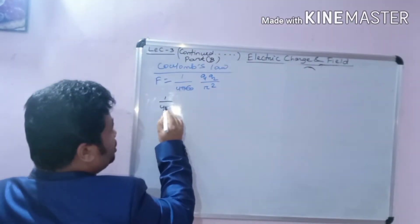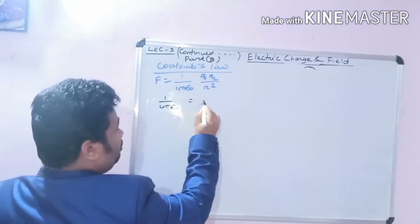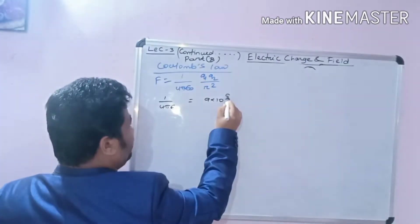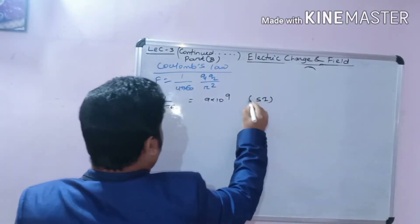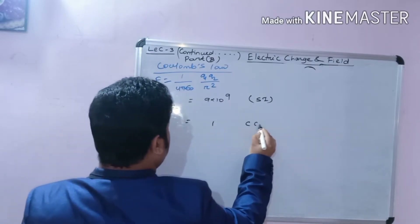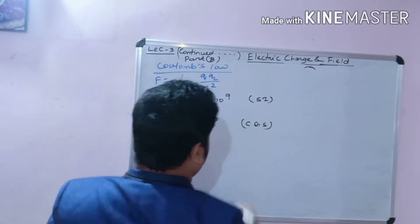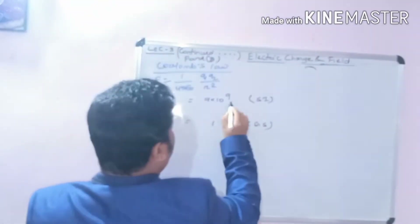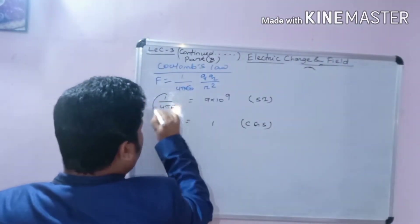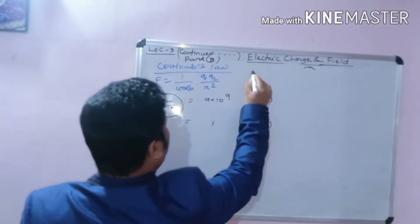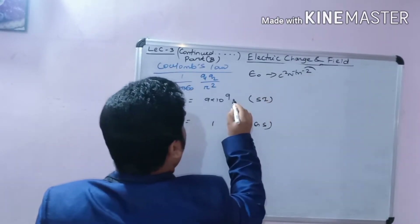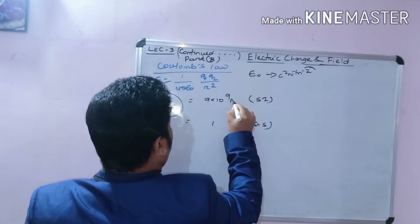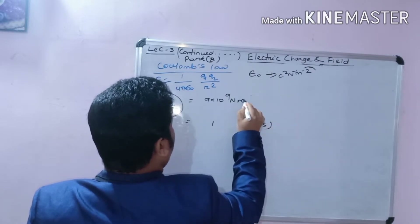The constant 1 by 4 pi epsilon-0 has a value of 9 into 10 to the power 9. In the SI system, epsilon-0 has a specific value. In the CGS system, 1 by 4 pi epsilon-0 equals 1. The unit of epsilon-0 is newton inverse meter inverse square, which is just the reciprocal of newton meter squared.